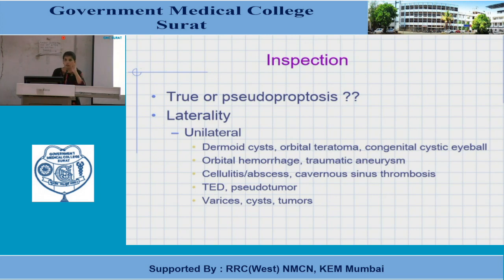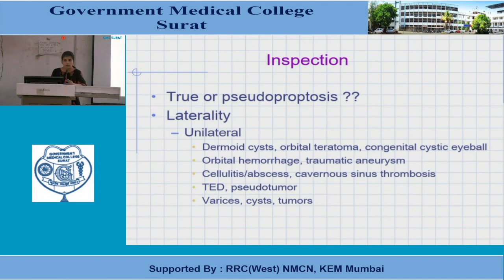Next, we determine if proptosis is unilateral or bilateral. Some causes are unilateral: dermoid cysts, trauma such as blowout fracture, orbital cellulitis or abscess, cavernous sinus thrombosis, and orbital varices. Thyroid eye disease can be unilateral or bilateral.